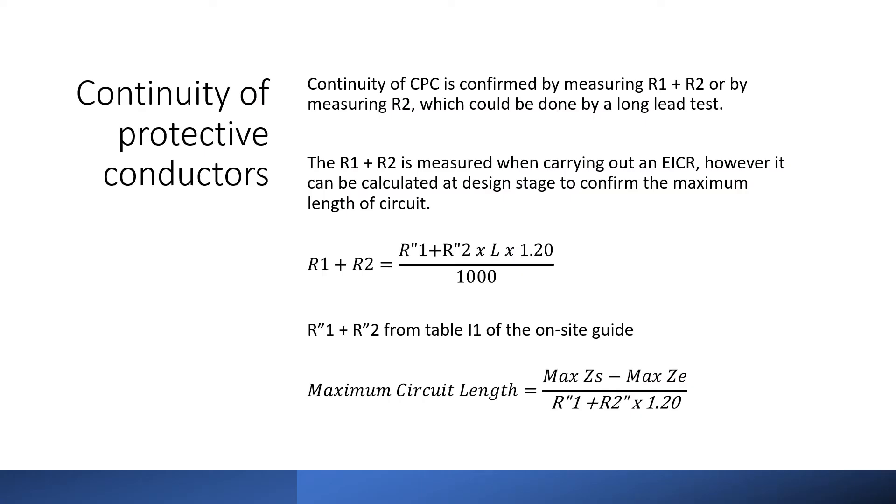So the first test is the continuity of protective conductors. It is necessary to measure either the R1 plus R2 or R2 to confirm the continuity of CPC and to ensure that the impedance of the circuit is sufficiently low so that the current that may flow under fault conditions is high enough to operate the protective device within the disconnection time.